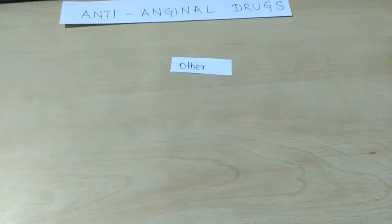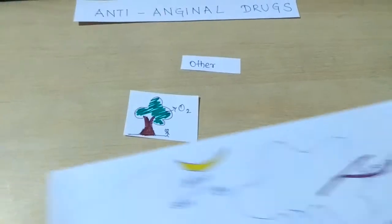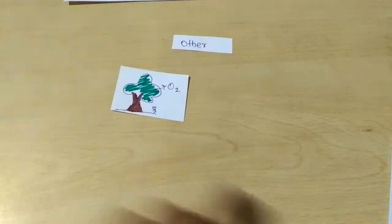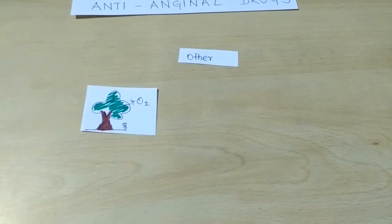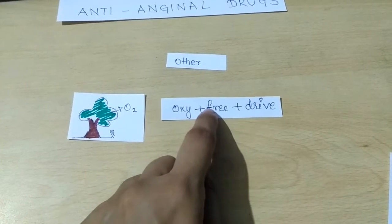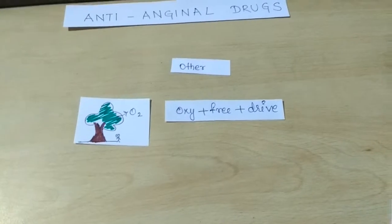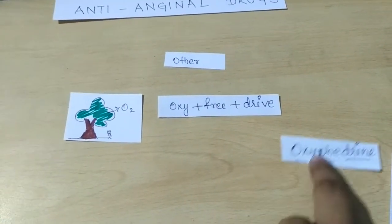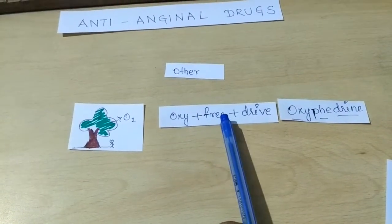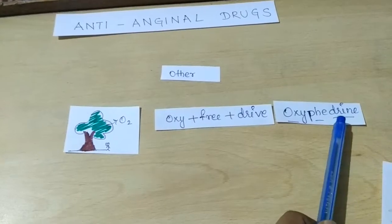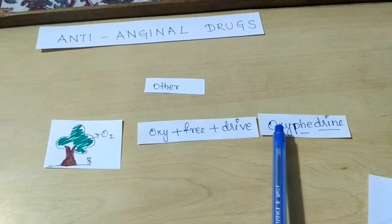The other group of classification is represented by the tree. This tree gives plenty of oxygen — we can say this tree gives us free oxygen, or 'oxy free drive'. This 'oxy free drive' tells us about the drug: 'oxy' stays as oxy, 'free' is written as P-H-E, and 'drive' as D-R-I-N-E — so 'oxy free drive' gives us the drug Oxyfedrine.